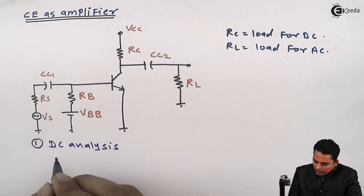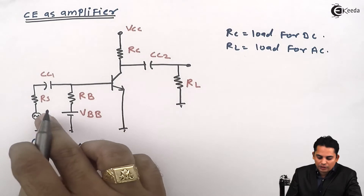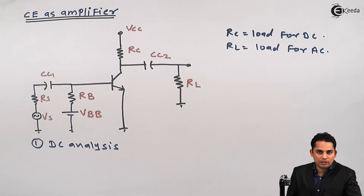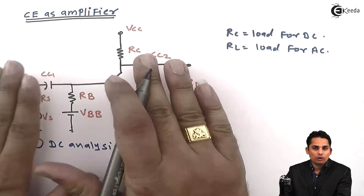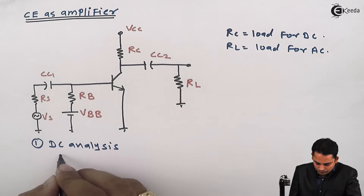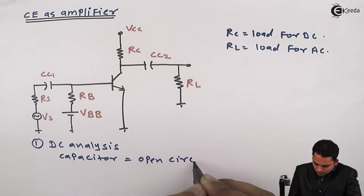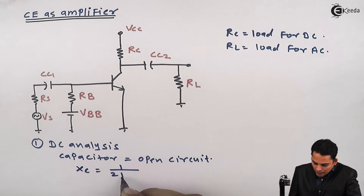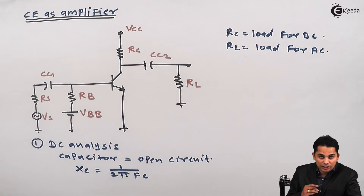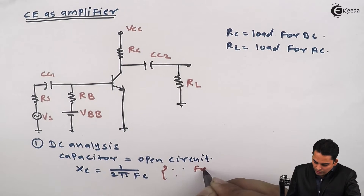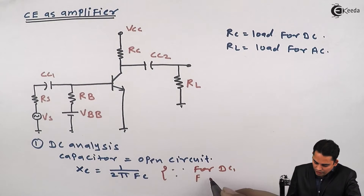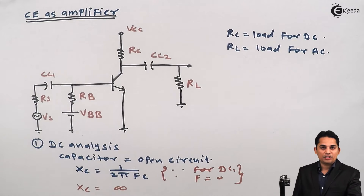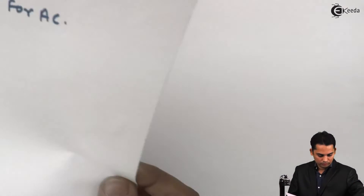In DC analysis, the DC equivalent circuit can be obtained by opening the capacitors. There are three capacitors available in the circuit: CC1 and CC2. We will open these capacitors so that the circuit simplifies. We can do this because the reactance of capacitance XC is given as 1 upon 2πFC, and for DC, frequency F is equal to 0, hence XC becomes infinite and the capacitors are open-circuited.